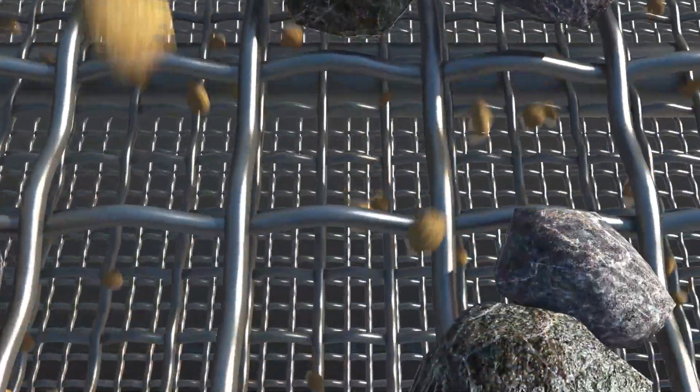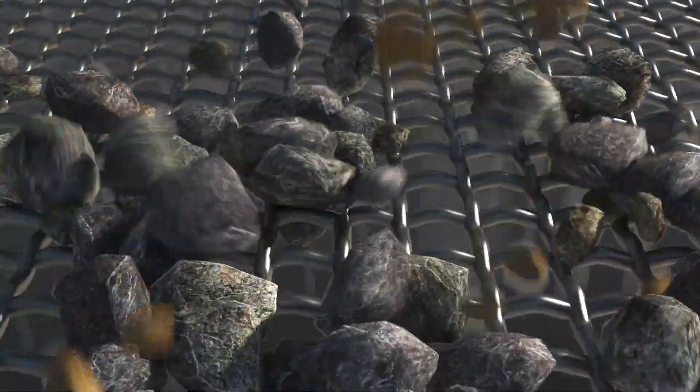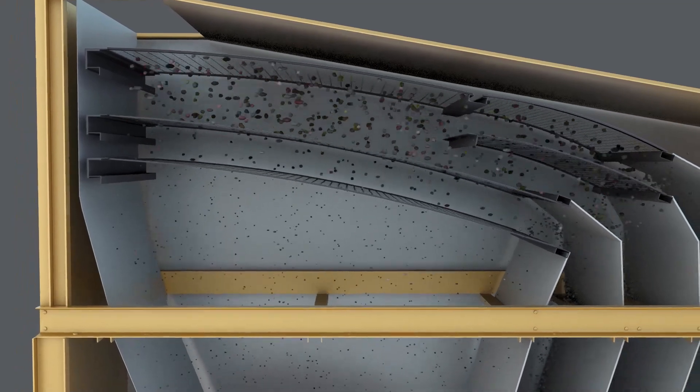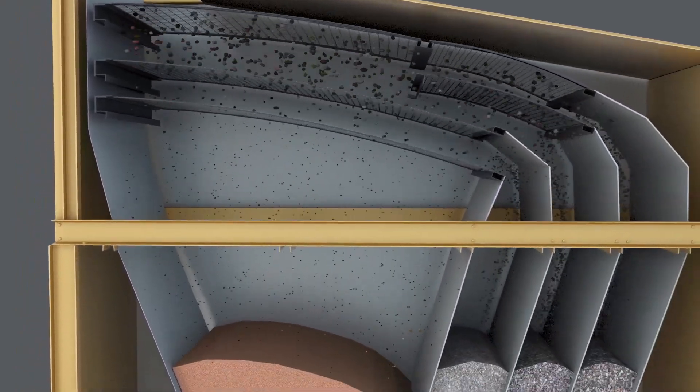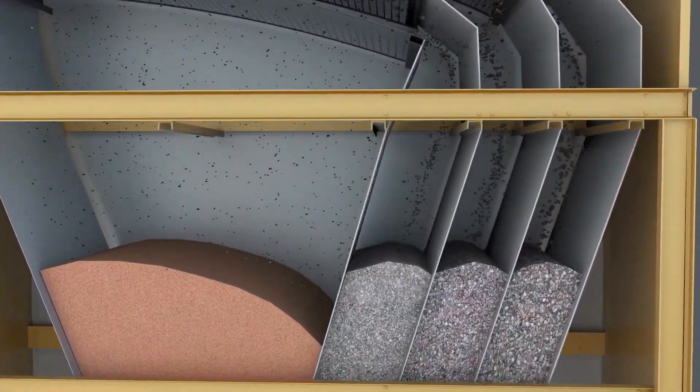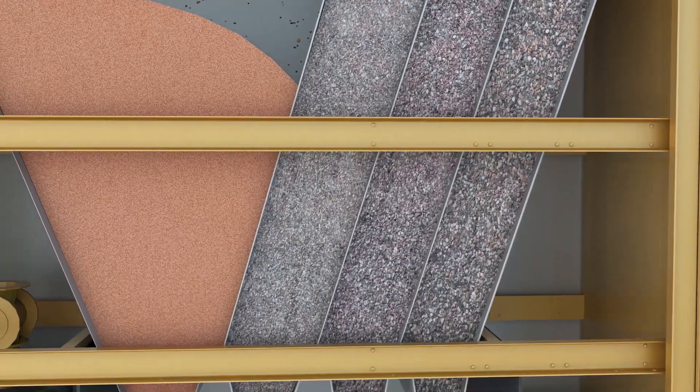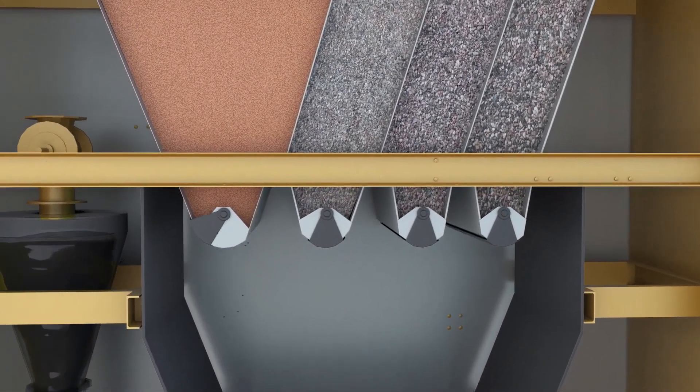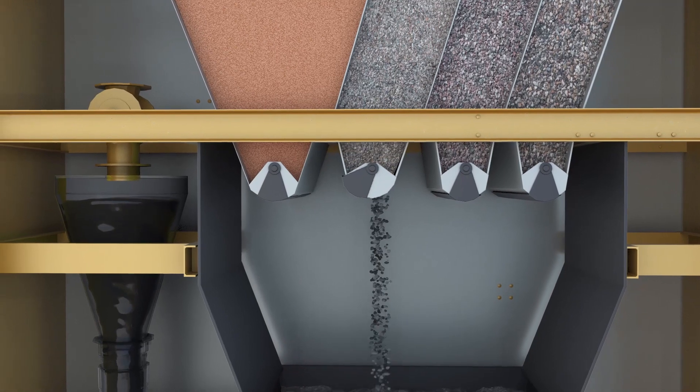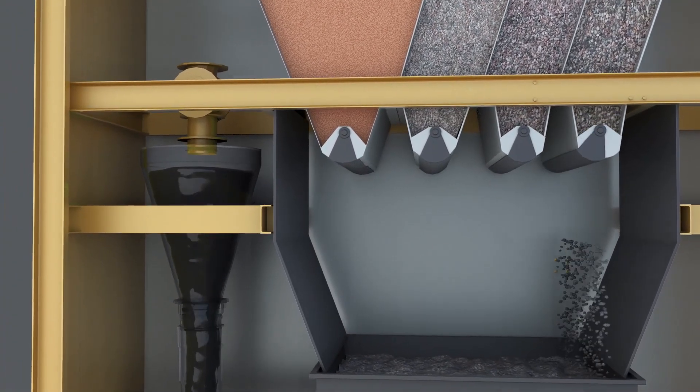tower. In the vibrating screen, the aggregates are separated according to size. The separated aggregates are then stored in respective compartments in the hot aggregate storage bin. As per the recipe decided by the user, aggregates are discharged